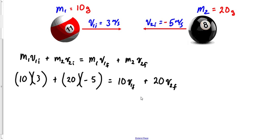and now you're about to see the problem. m1 which is 10 v1 final plus m2 which is 20 v2 final. Here's the problem: you have two unknowns. You don't know v1 or v2 final.